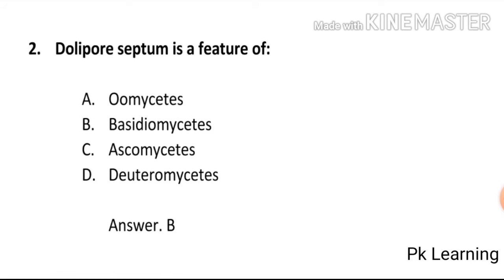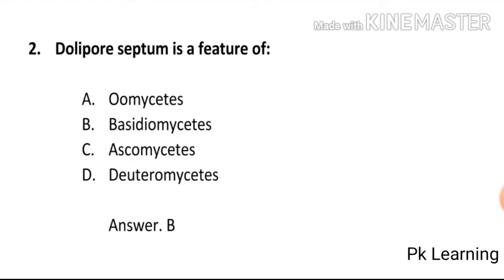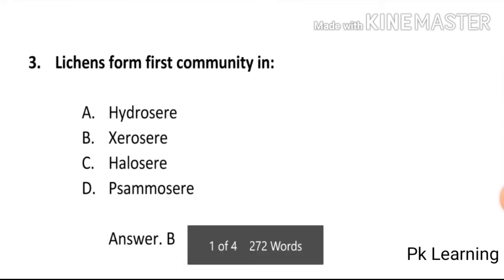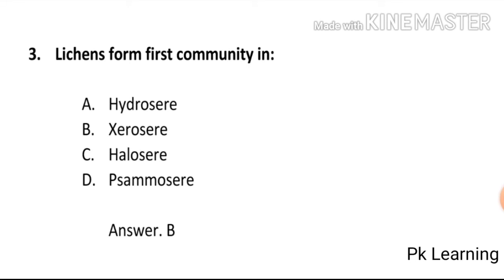Dolipore septum is a feature of: A) Oomycetes, B) Basidiomycetes, C) Ascomycetes, D) Deuteromycetes. The answer is B, Basidiomycetes. Dolipore septum is found in Basidiomycetes. B is the correct option.